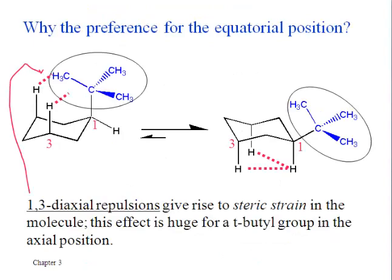This next slide shows why it's the case that equatorial is better. You really can't see this with the models because the atoms are really further apart than they would be in real life. But when you have something like a t-butyl group here in the axial position, it's kind of bumping up against these hydrogens that are also axial but two carbons away.